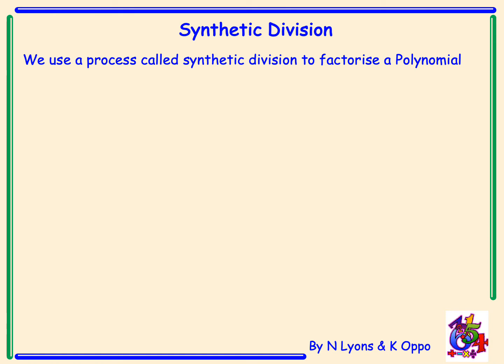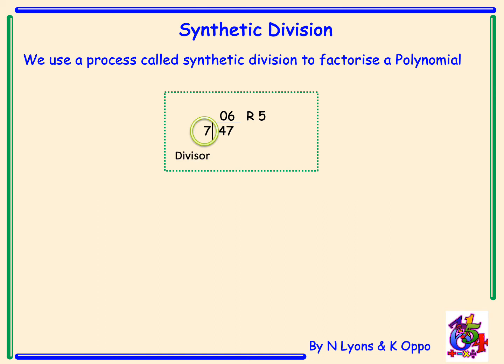Synthetic Division. We use a process called synthetic division to factorise a polynomial. Here is an example: 47 divided by 7, to help us with some terminology. The number 7 is our divisor, 5 is our remainder, and 6 is our quotient — so the quotient is the answer we get.